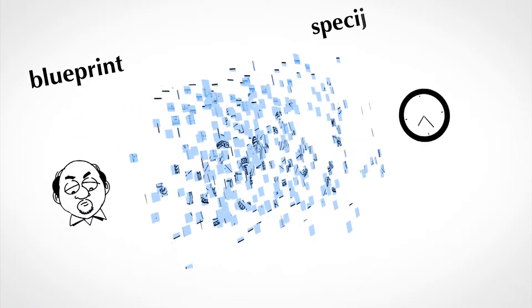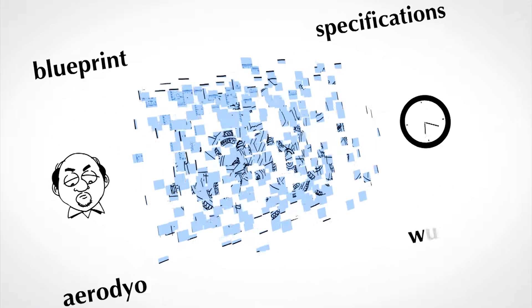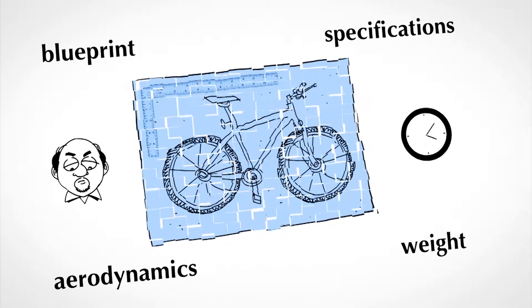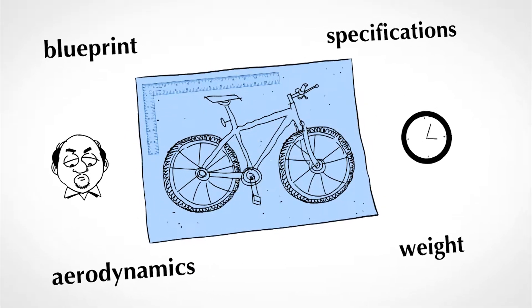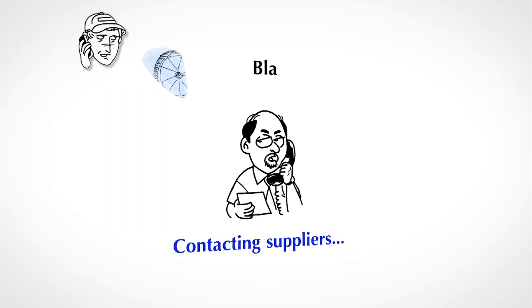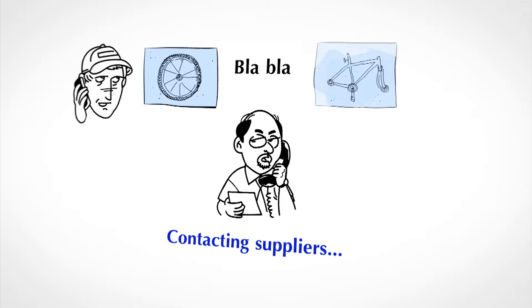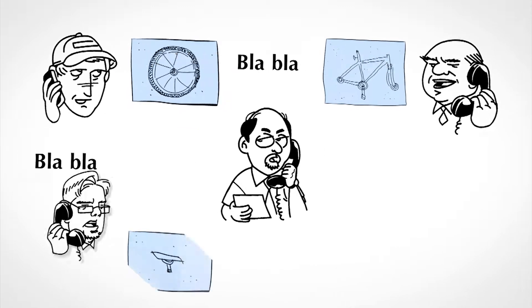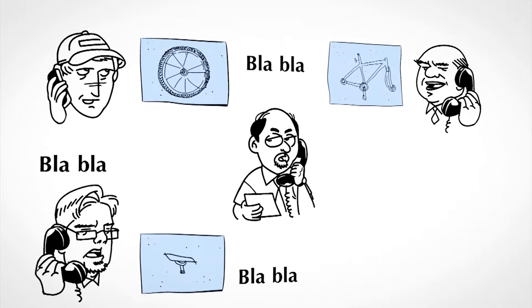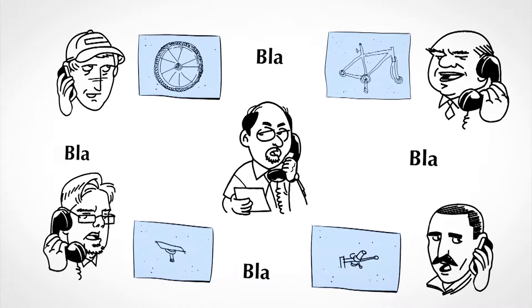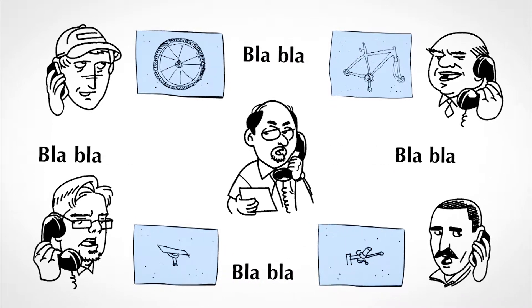Mr. Lopez instructs his engineers to draft a blueprint of the bicycle, providing also the initial technical specifications regarding the product's aerodynamics and weight. As a next step, he contacts directly his external associates, providing them with the required information and asks them to send back detailed designs and specifications for each bicycle component.